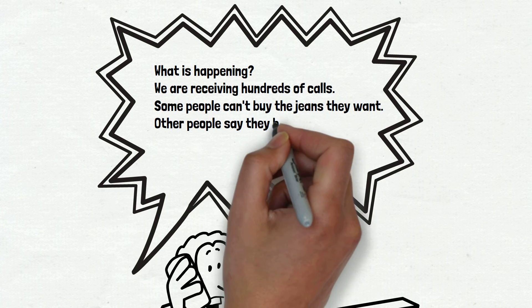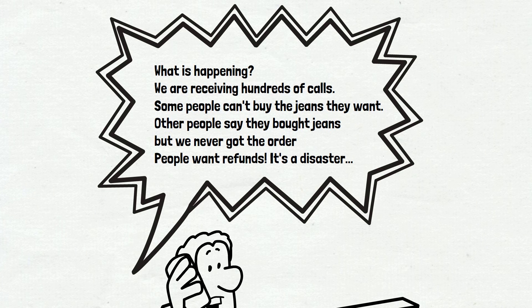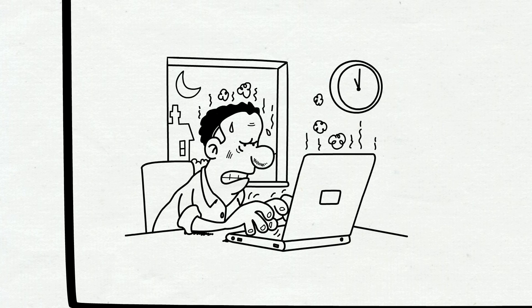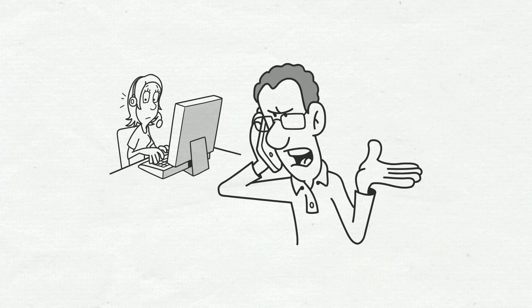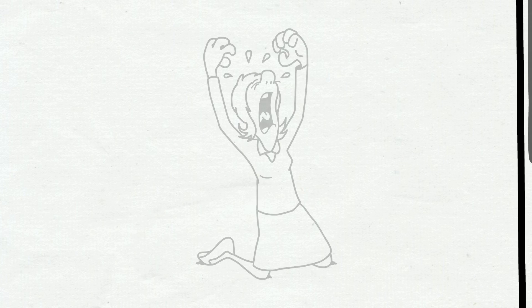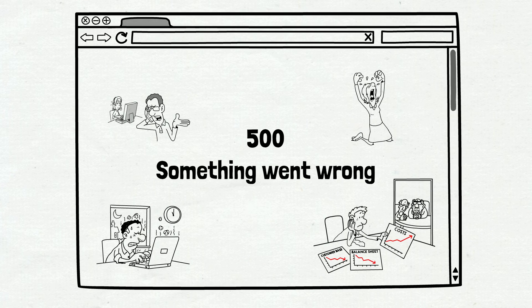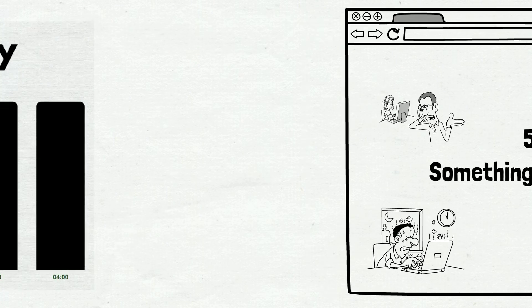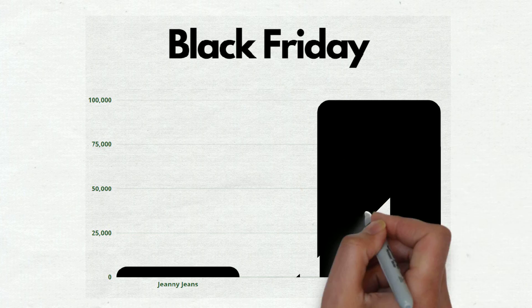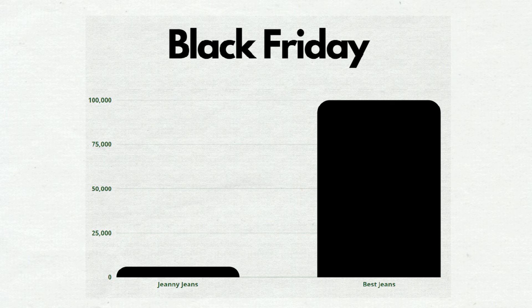At the same time, the manager received a phone call. The customer from Genie Jeans company is calling — they received hundreds of calls to the hotline. People lost money and want refunds, and the customer is very disappointed. A lot of people saw this error. Can you imagine putting in your credit card details, clicking the buy button, and then seeing a 500 error? As a result, the company loses customers and reputation. Meanwhile, competitors — Best Jeans Company — sold 100,000 pairs of jeans that night, because people couldn't buy from Genie Jeans and went to competitors. Genie Jeans sold only 6,000 pairs and lost reputation and customers.